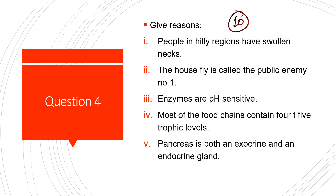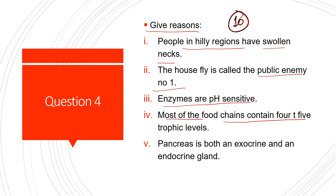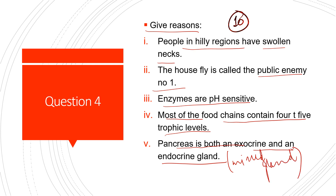Question 4 — Give Reasons: (1) People in hilly regions have swollen necks. (2) Housefly is called public enemy number one. (3) Enzymes are pH sensitive. (4) Most food chains contain four to five trophic levels. (5) Pancreas are both exocrine and endocrine glands — they are called mixed glands because they have both exocrine and endocrine functions.